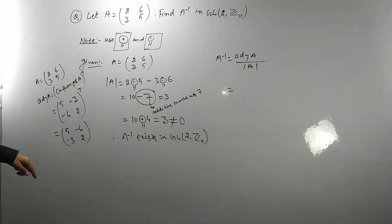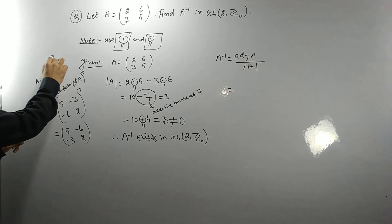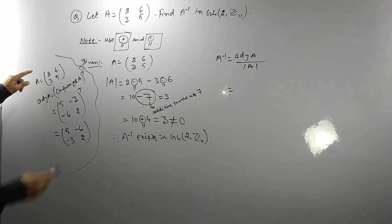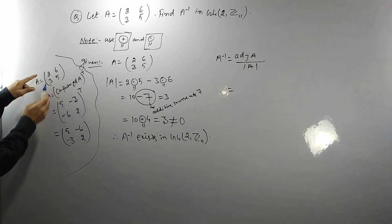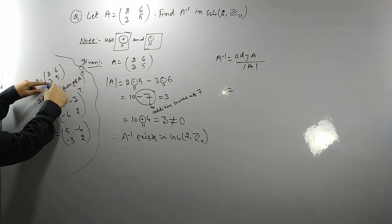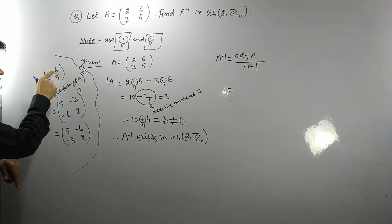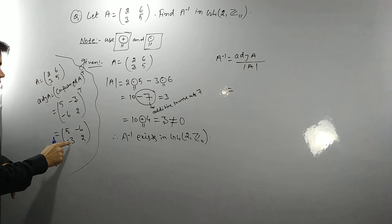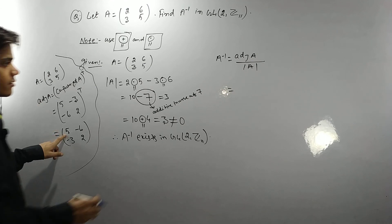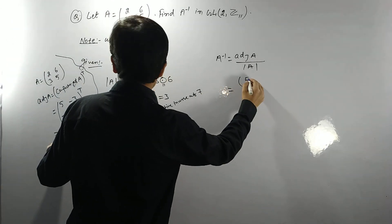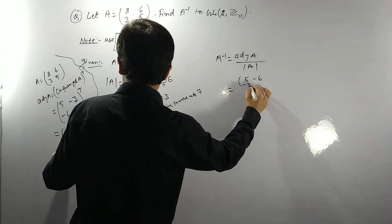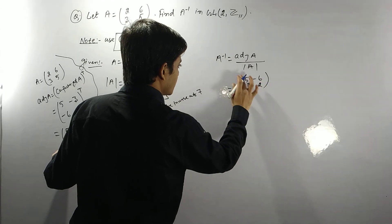There is a useful trick: for a 2×2 matrix, to find the adjoint just interchange the two diagonal elements (5 and 2), and change the signs of the off-diagonal elements (−6 and −3). So the adjoint of A is [[5, −6], [−3, 2]], and the determinant of A is 3.